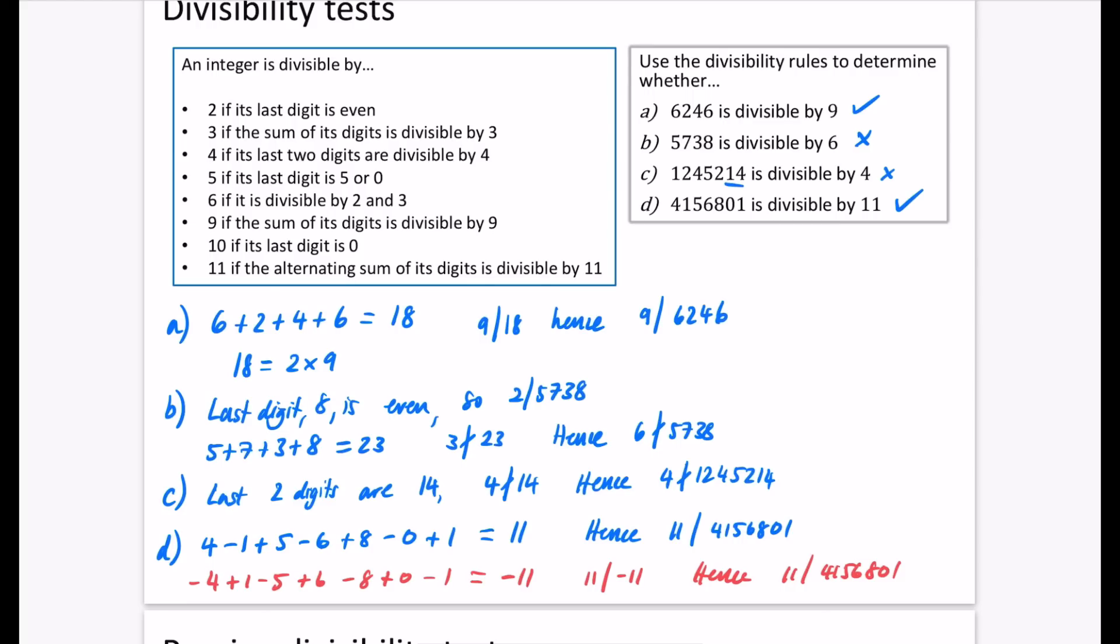So let's just double check it. 4,156,801 divided by 11. It is 377,891. So we've got these two working, these two not working, and these are the ways that we show it here.